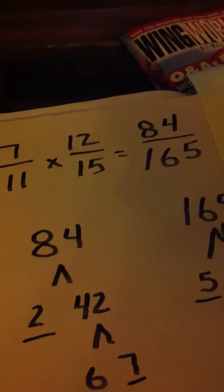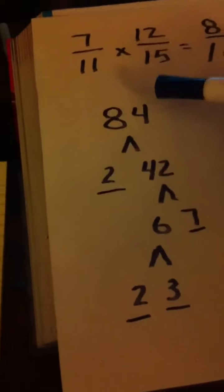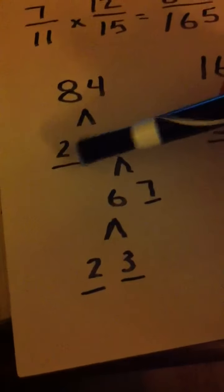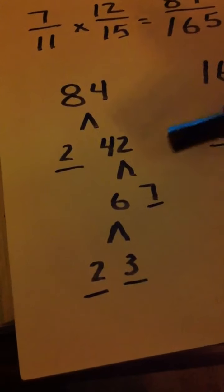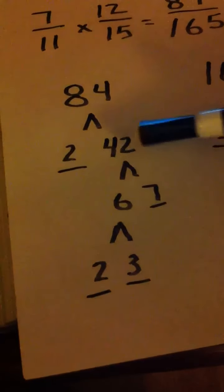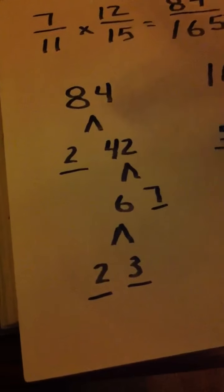But slow down just a little bit and let's do a factor tree for 84. If you have 84 factors into 2 times 42, 6 times 7 and then 2 times 3. So you have the factors of 2, 2, 3 and 7.